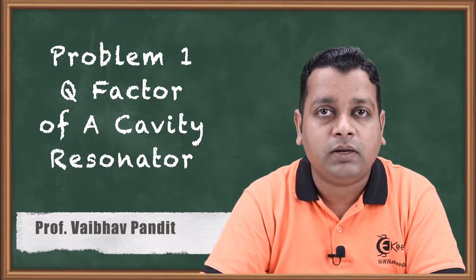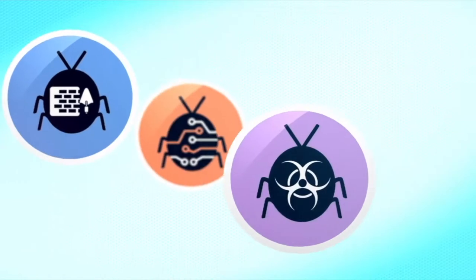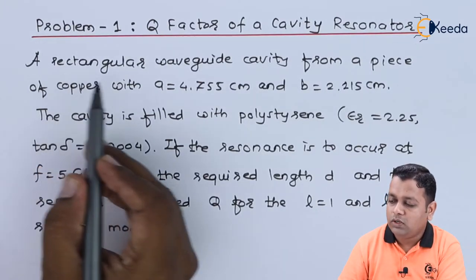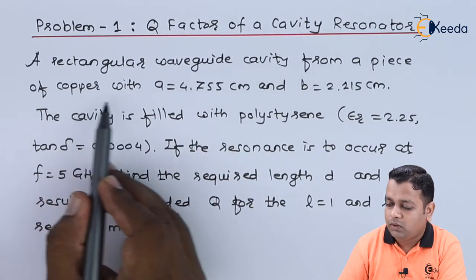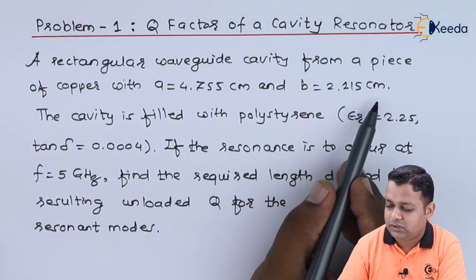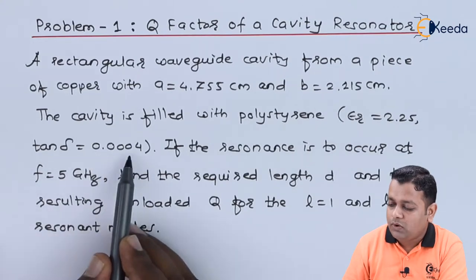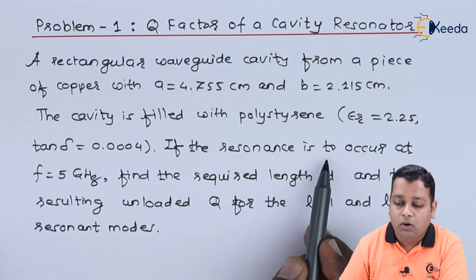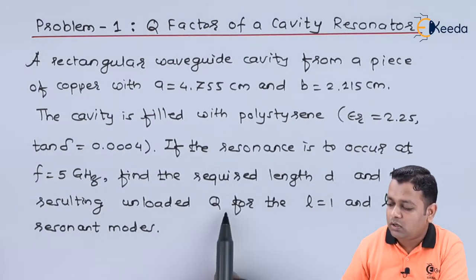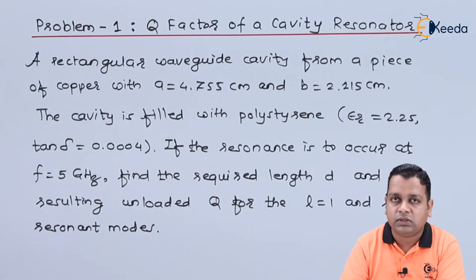So let us have one problem solved with respect to the rectangular cavity resonator. Here we have the problem statement: a rectangular waveguide cavity made from a piece of copper with A equal to 4.755 centimeters and B equal to 2.215 centimeters. The cavity is filled with polystyrene, epsilon r equal to 2.25, and tan delta equal to 0.0004. If resonance is to occur at f equal to 5 gigahertz, find the required length d and the resulting unloaded quality factor Q for l equal to 1 and l equal to 2 resonant modes.